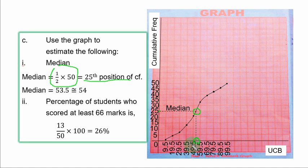Remember that one line here is 2. So after 49.5, you have 51.5 and 53.5. To the nearest whole number, you have 54 as the median.